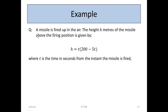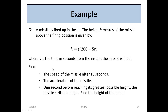Here's an example. A missile is fired up into the air. The height h meters of the missile above the firing position is given by h = t(200 − 5t), where t is the time in seconds from the instant the missile is fired. We are asked to find: the speed of the missile after 10 seconds; the acceleration of the missile; and, given that one second before reaching its greatest possible height the missile strikes a target, the height of that target.